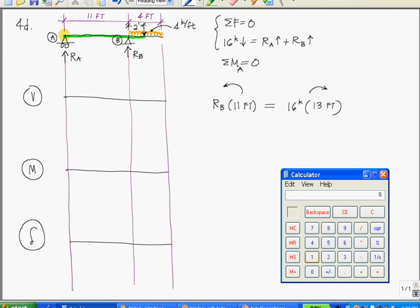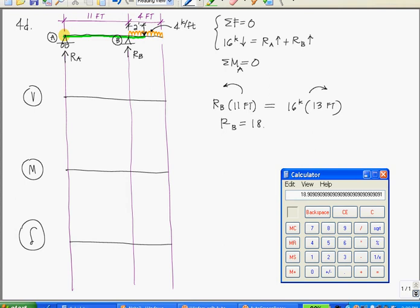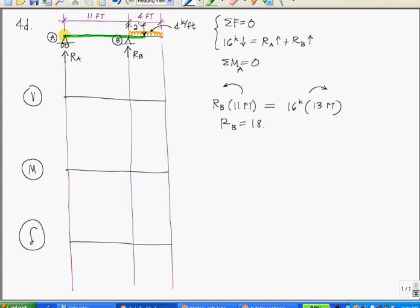Now we note that we have accounted for all of our forces and reactions, so let's set these equivalent to each other. Run it through the calculator. We have 16 times 13 divided by 11 equals 18.91. Units, feet cancel, so our units are just kips. And that's all we can do for sum of the moments.